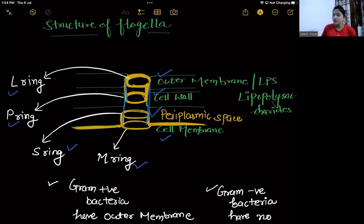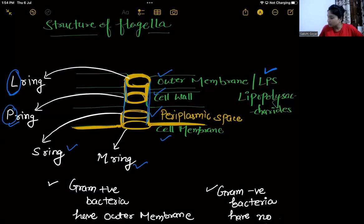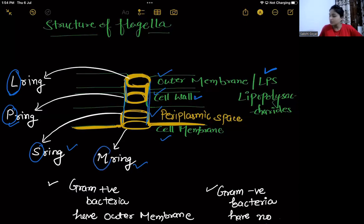There is one outer ring pair and one inner ring pair. The outer ring pair is the L ring and P ring; the inner ring pair is the S ring and M ring. Please write this in your notes: L stands for lipopolysaccharide, P stands for peptidoglycan (the cell wall), S stands for supramembrane or periplasmic space, and M stands for membrane. So we have the lipopolysaccharide ring, peptidoglycan ring, supramembrane/space ring, and membrane ring — one outer ring pair (L and P) and one inner ring pair (S and M).